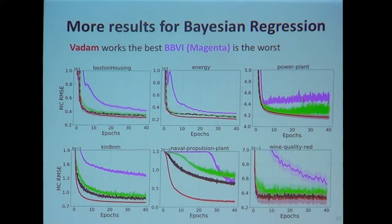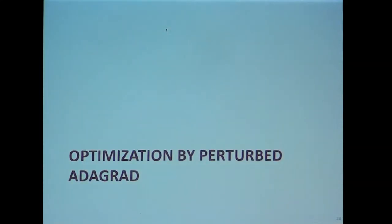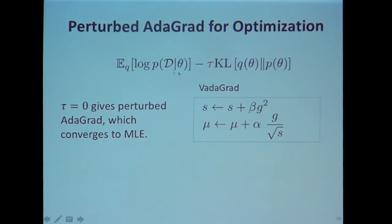So far I've been talking about variational inference. Let me switch gears and talk about how we can use these methods for optimization — going back to just doing maximum likelihood estimation. You can use the same perturbed optimizers to perform maximum likelihood estimation.